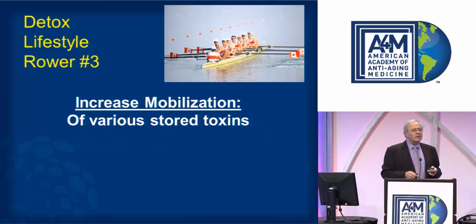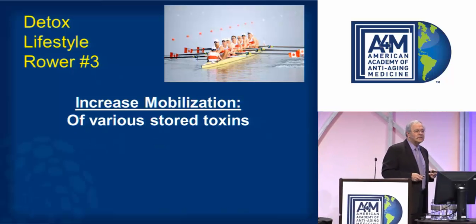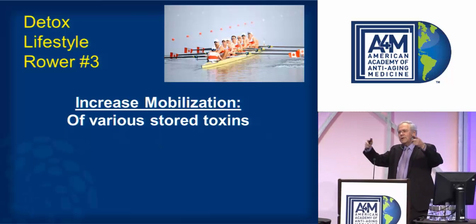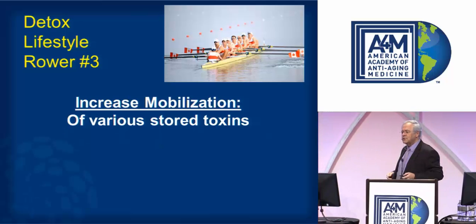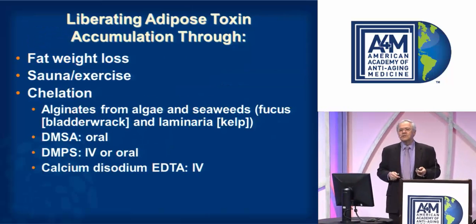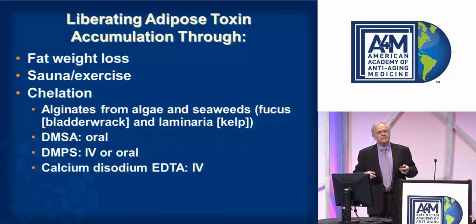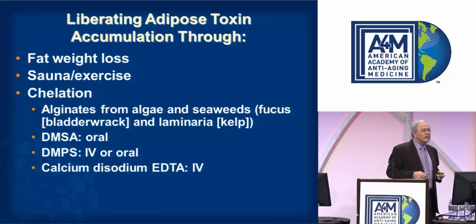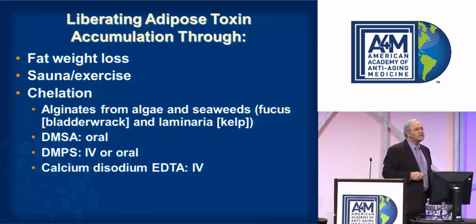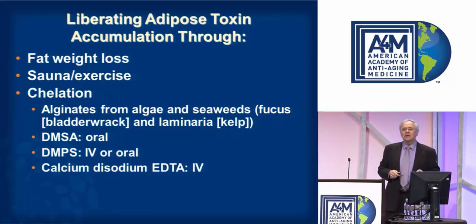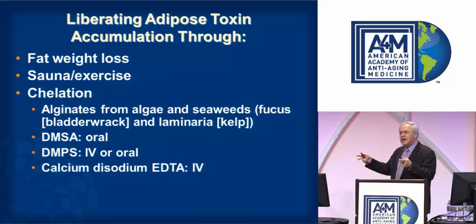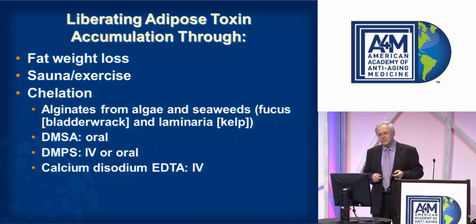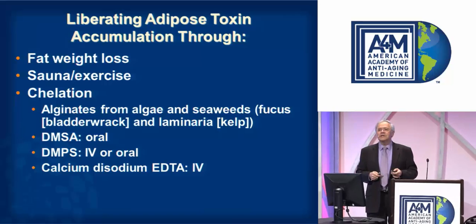Rower number three on our Detox Lifestyle Gold team: we want to increase mobilization of stored toxicants. We can do that in various ways — losing fat mass is one way, exercise is another, and chelation therapy using natural chelates such as those from alginates from algae and seaweeds.